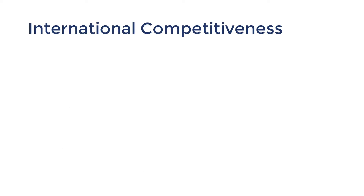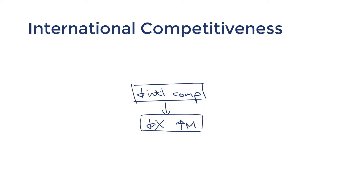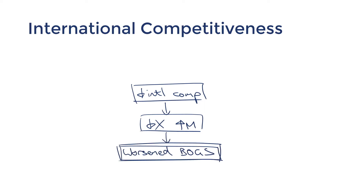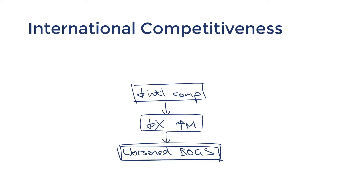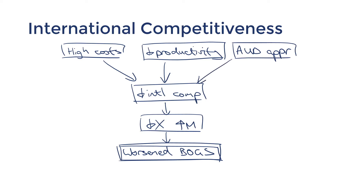International competitiveness is another concept covered in topic two. It's a structural influence on BOGS, meaning it has an ongoing influence. When we lack international competitiveness, we receive less export revenue and are more likely to spend more on imports, resulting in a BOGS deficit. If you remove the commodity booms and observe the long-term trend, you'll see that BOGS tends to be in deficit, largely attributed to Australia's lack of international competitiveness. The causes include Australia's high labour costs and low productivity, as well as cyclical factors like an appreciating Australian dollar.